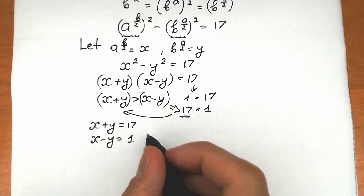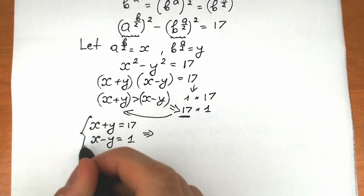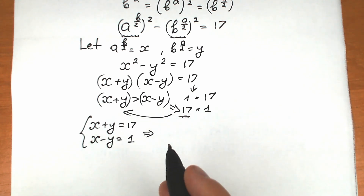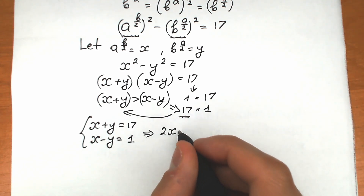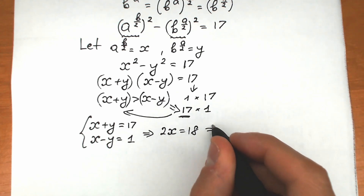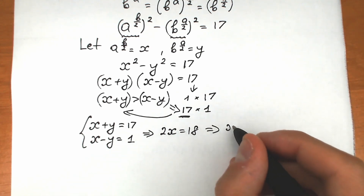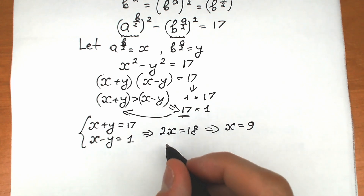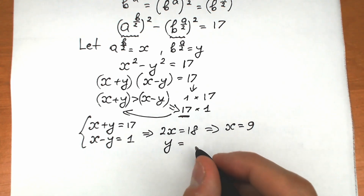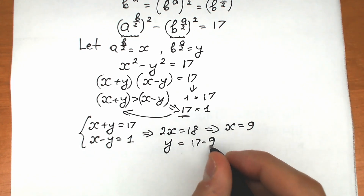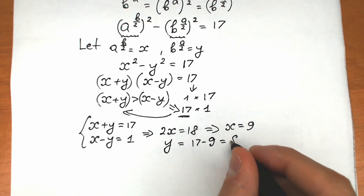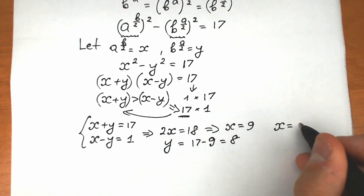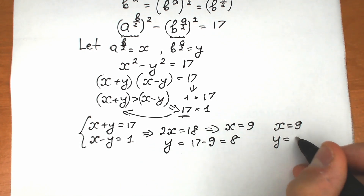Adding both equations, we can cancel y: 2x equals 18, so x equals 9. From the first equation, y equals 17 minus 9, which equals 8. So x equals 9 and y equals 8.